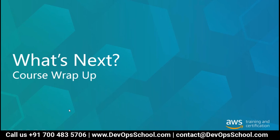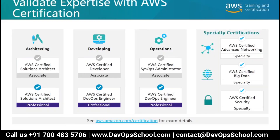In this wrap-up, I will talk about what next steps you have. This is the learning path on architecting — we are targeting the certified solution architect associate, and you may also want to target professional. That's the next step on architecting. As a developer, the certified developer associate is one learning path. After you achieve this, you may want to target the certified DevOps engineer.